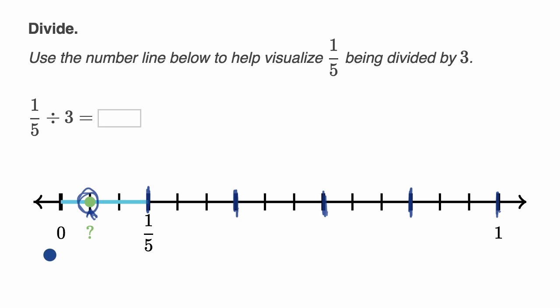Well, the key realization is when we divided each of the fifths into three more equal sections, we can now think of each of these steps as a 15th, because now we have one, two, three, four, five, six, seven, eight, nine, 10, 11, 12, 13, 14, 15 equal sections between zero and one.